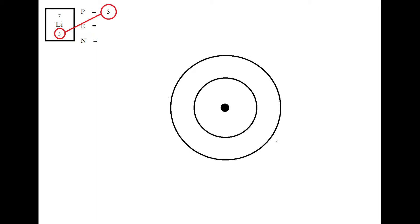In an atom, the number of electrons and the number of protons will always be exactly the same. So since we already know that lithium has three protons, we can also say that it must have three electrons.